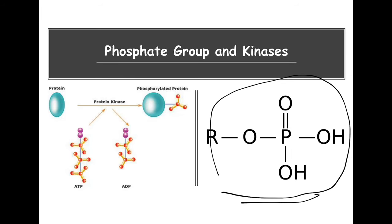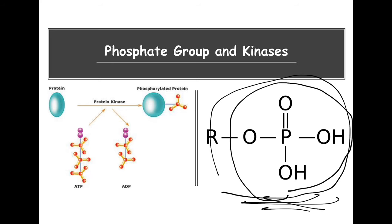This is a phosphate group — an important key player in making ATP. There's a process called phosphorylation, which is when you actually add a phosphate group to a structure. You can phosphorylate proteins and different structures. The enzyme that plays a role in phosphorylation is a kinase. So if you are transferring phosphate groups, just know a kinase is playing a role. You can also have dephosphorylation when you remove a phosphate.